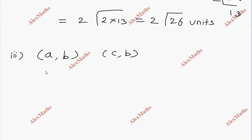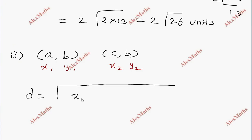Now the points are labeled x1, y1 and x2, y2, which are (a, b) and (c, b). We apply the distance formula: distance equals the square root of (x2 minus x1) whole square plus (y2 minus y1) whole square.